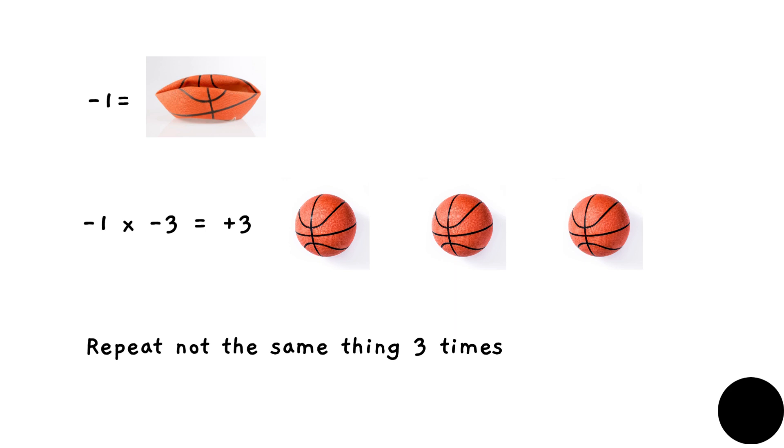Let's change the scenario. Here we have a deflated ball, minus one. Now we are multiplying by minus three. What does that mean? Here we are to repeat not the same thing three times, but the opposite thing three times.